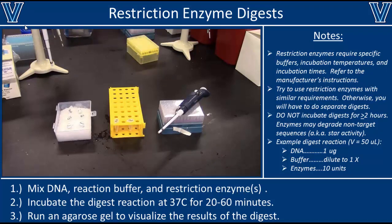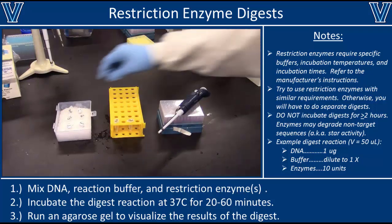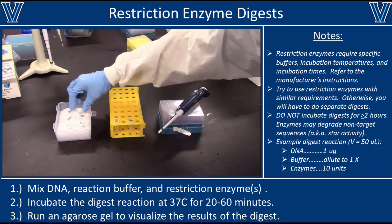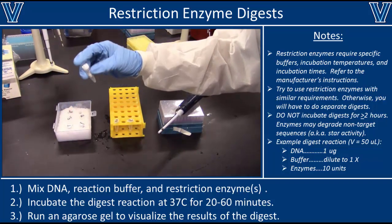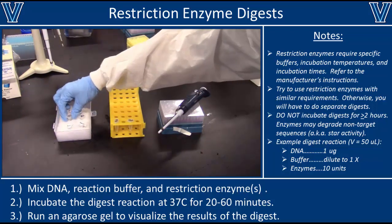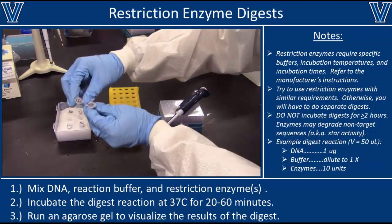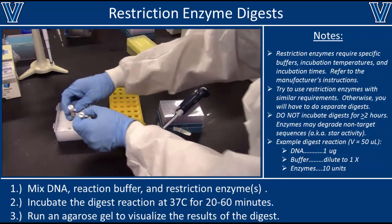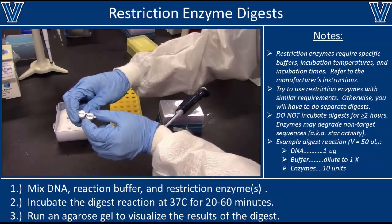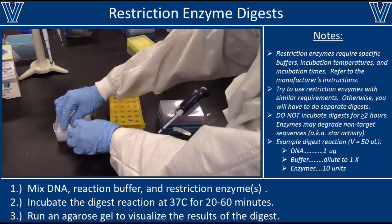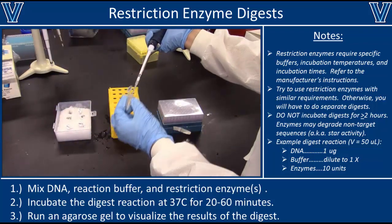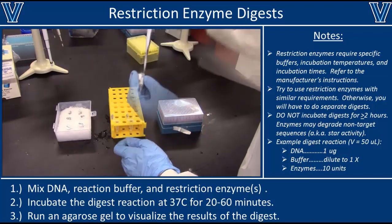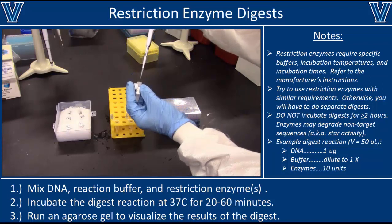Now that you know how restriction enzymes work, let's set up a digest. Begin by collecting all the reagents you'll need: ultrapure water, a buffer concentrate specific to your enzymes — in this case these enzymes prefer buffer 2.1 — your DNA samples (in this case we have our plasmid and our PCR product), and your restriction enzymes. In this digest we'll be using BSRG1 and HIND3.